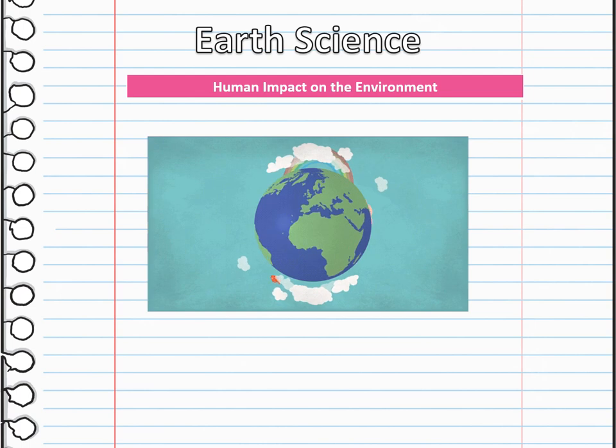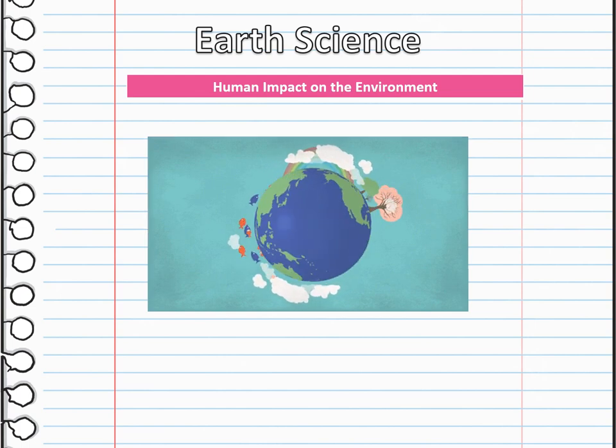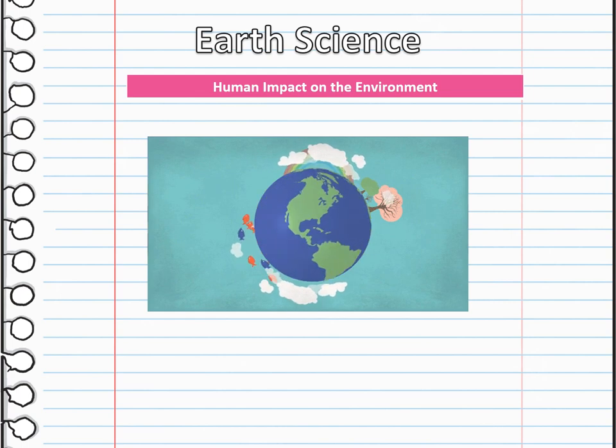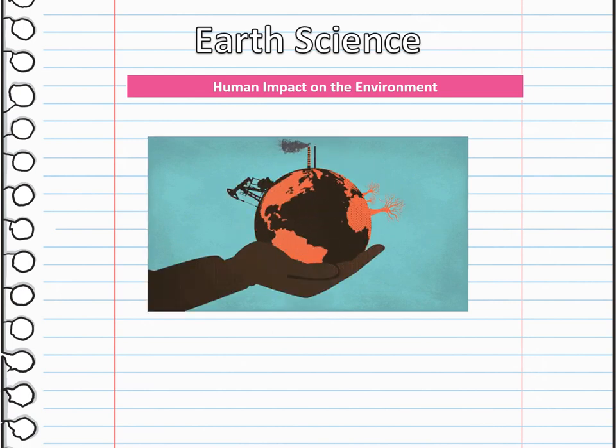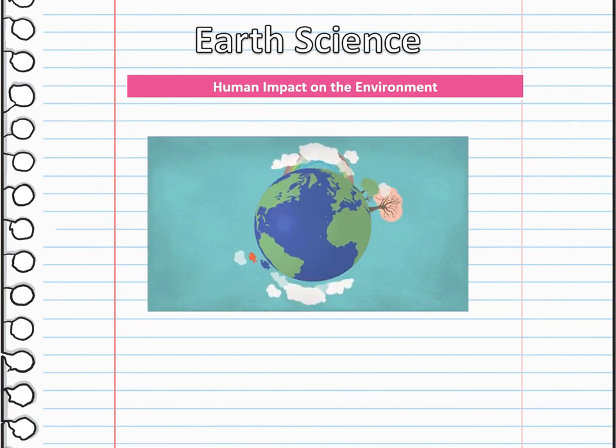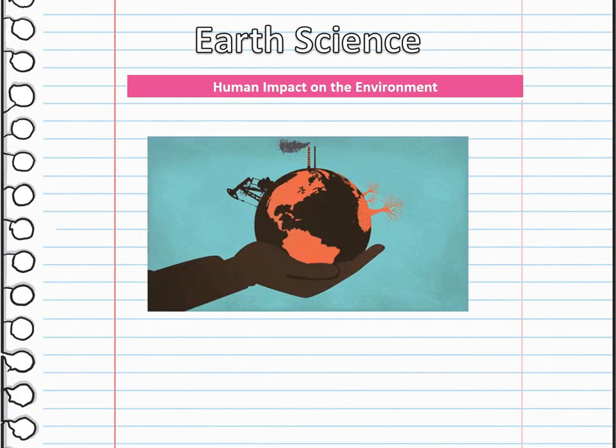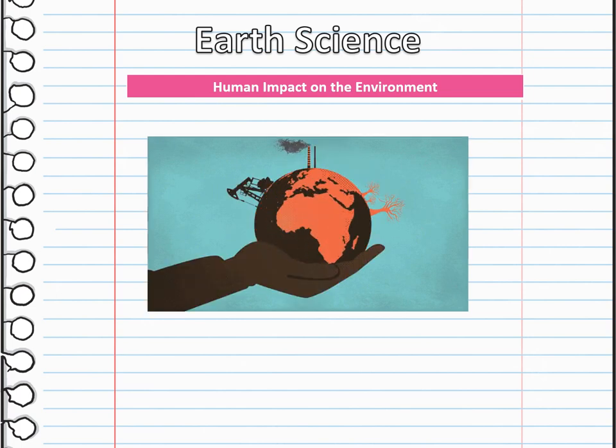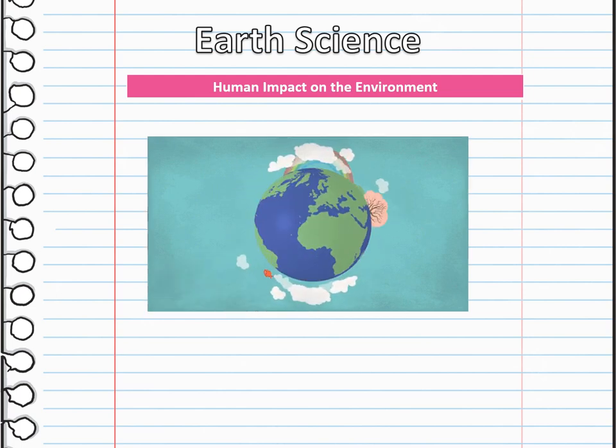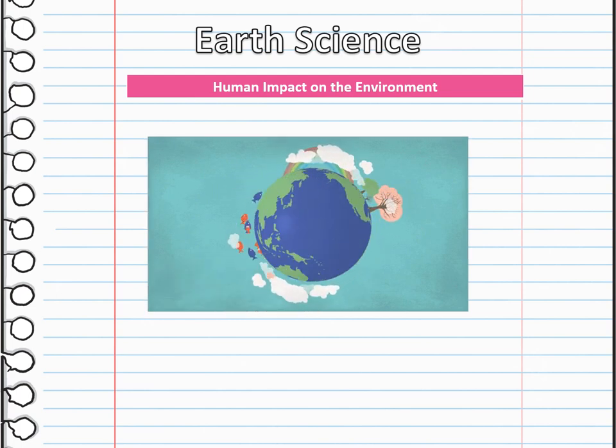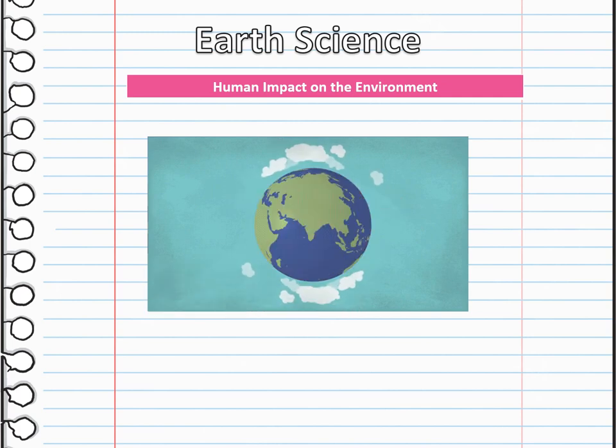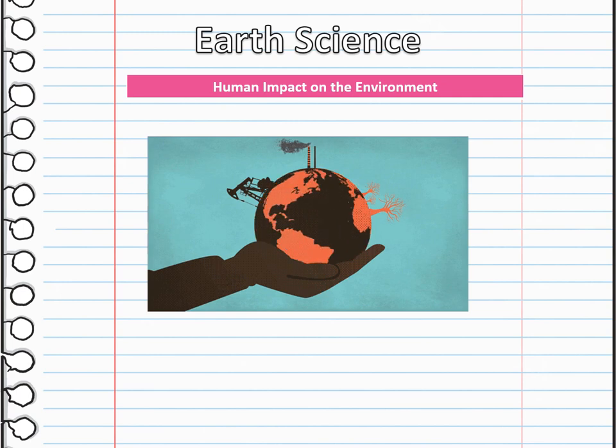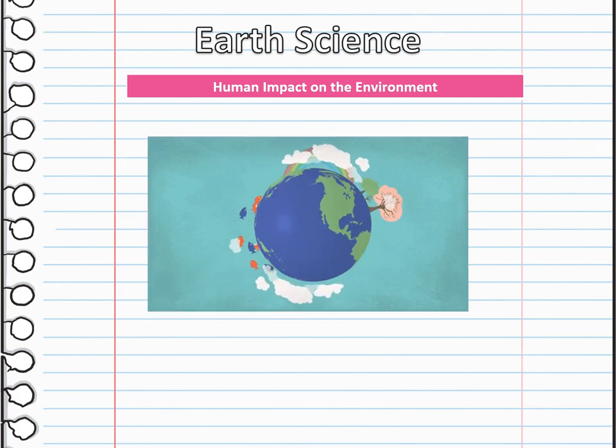Earth science, which is human impact on the environment. We are going to talk about the various ways that humans impact Earth's system form the context of this topic. You will identify the ways that a growing human population uses and affects the Earth, air, land, and water resources.